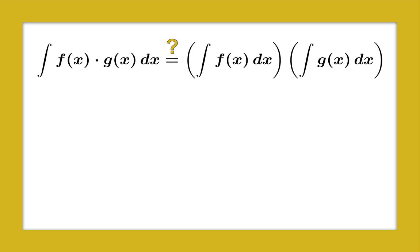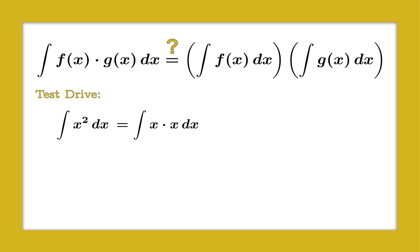A naive idea pops into our head: is it just possible that the integral of a product is the product of the integrals? Well, if this is true, we should test it against a case we understand very well. For example, we could integrate x squared, and we know that x squared is x times x. So if this rule works, we should be able to integrate x twice and then multiply the results together.